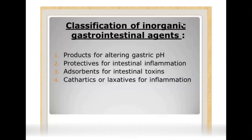The first classification covers inorganic gastrointestinal agents — products that alter gastric pH. Gastric pH is important for protecting against intestinal inflammation. Ulcers and excess mucous can result from excess acid produced in the body. Toxic materials like lead from factory-related areas can cause poisoning, which is why cathartics and laxatives are used.